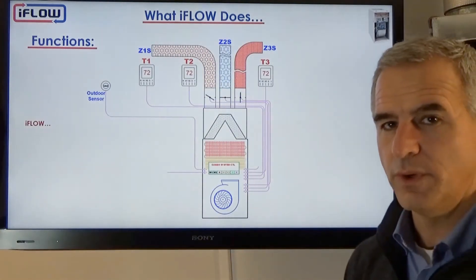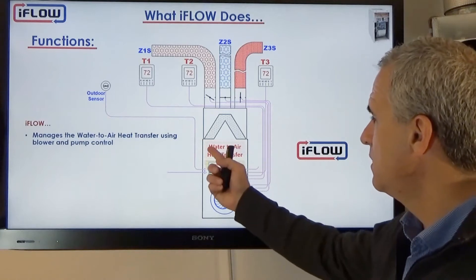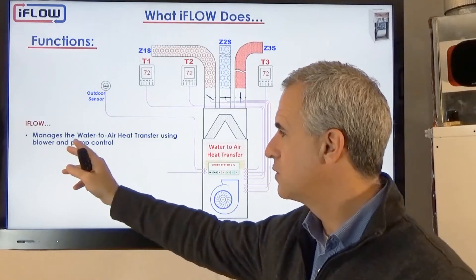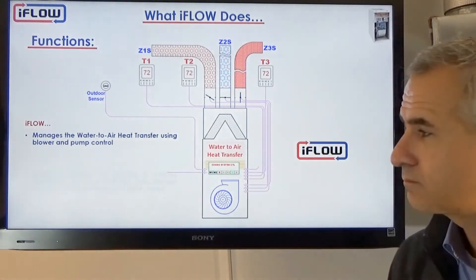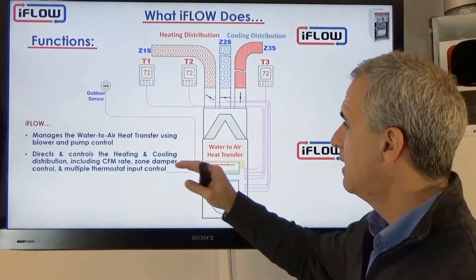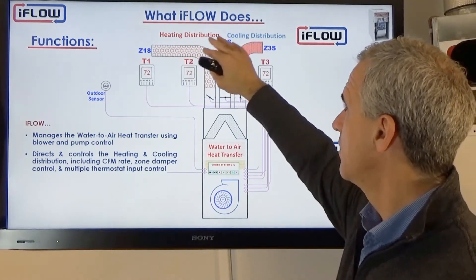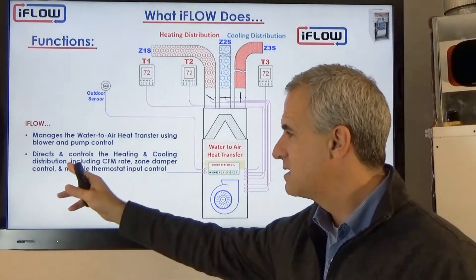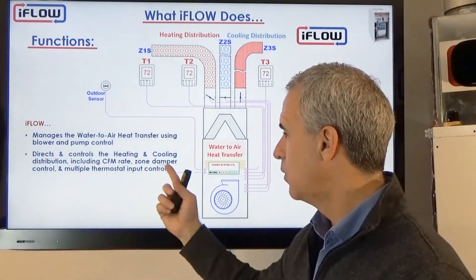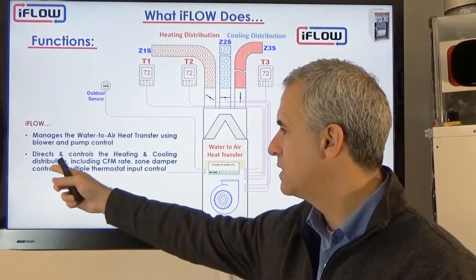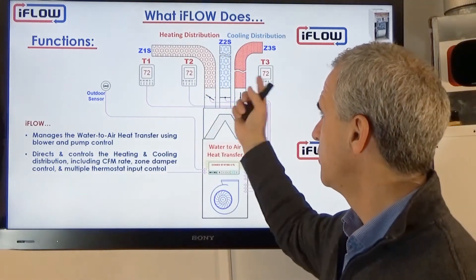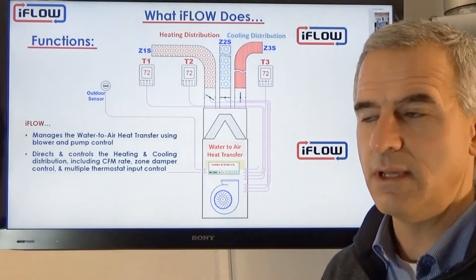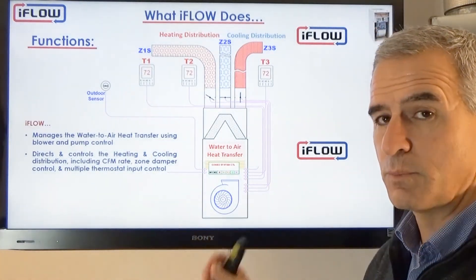To summarize what we do at iFlow: we manage water-to-air heat transfer using our blower and pump control. We distribute that through the home using the CFM rate and modulation of the CFM rate, with damper control and multiple thermostats if we're using zoning, to distribute most efficiently and effectively to the various parts of the home.